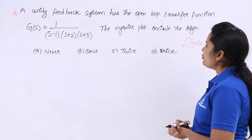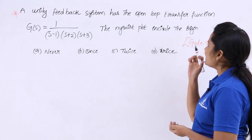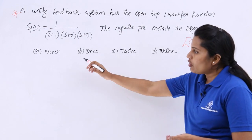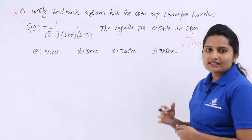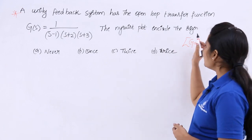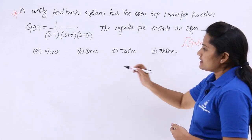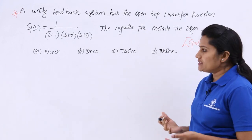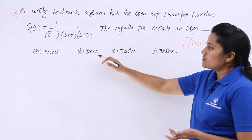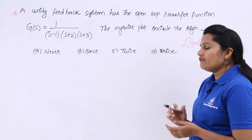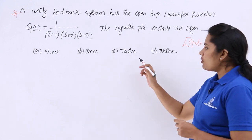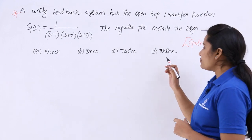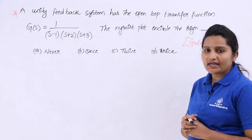The question asks: how many times does the Nyquist plot encircle the origin? The options are: (a) never, (b) once, (c) twice, (d) thrice.